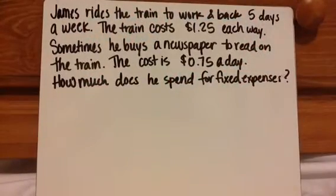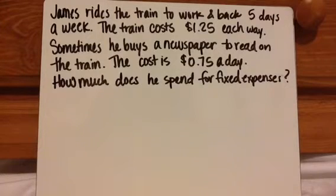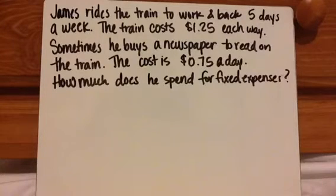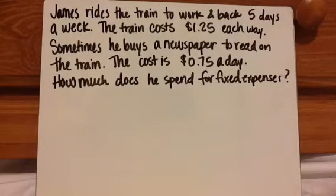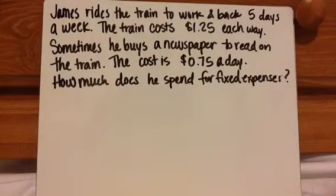Let's look at another example. James rides the train to work and back five days a week. The train costs $1.25 each way. Sometimes he reads a newspaper on the train. The cost is 75 cents a day. How much does he spend for fixed expenses? I want you to circle what the fixed expenses are, come up with a plan on how to solve it, and then press play. So press pause right now to figure it out.